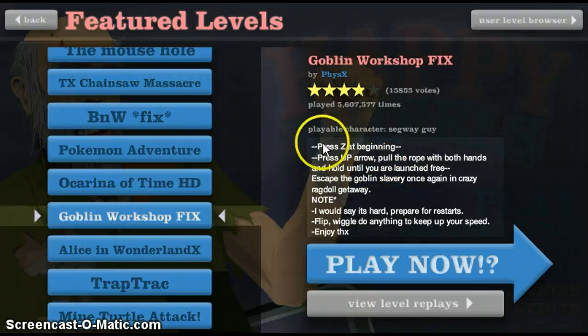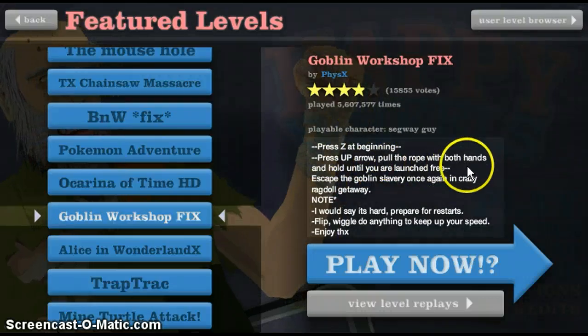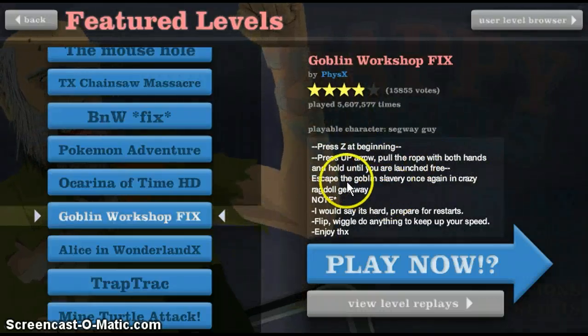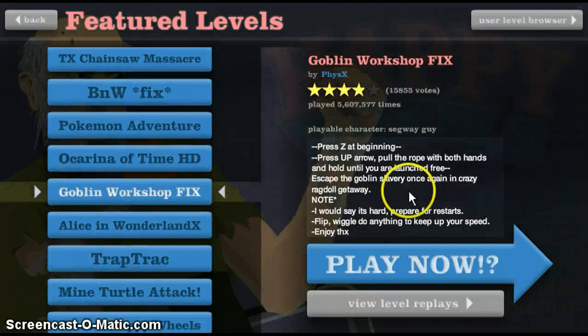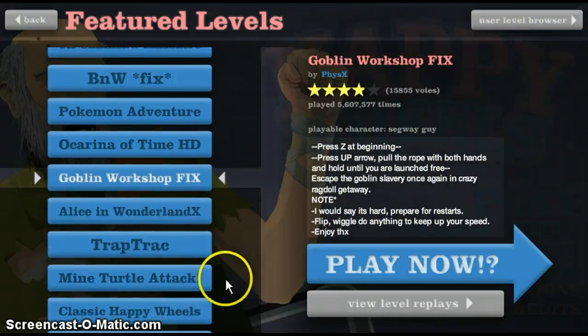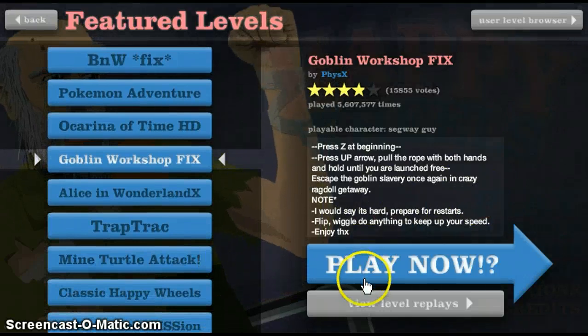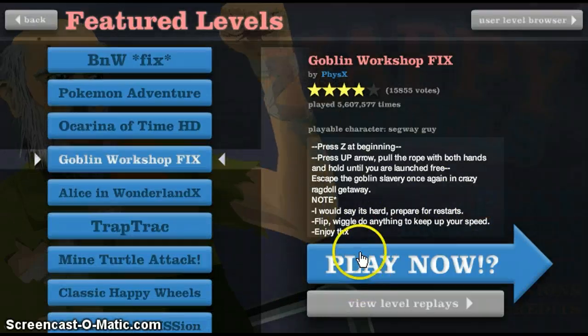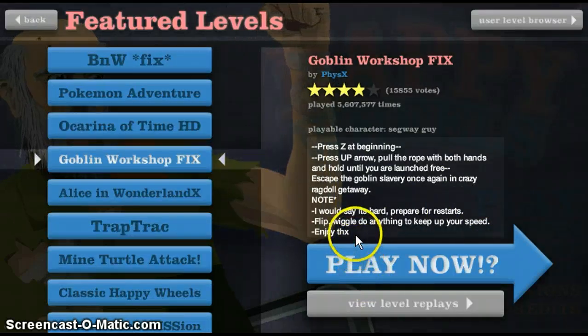Press Z at the beginning, press up arrow, pull the rope with both hands and hold until you are launched. Free, skip the Goblin slavery once again and crazy ragdoll getaway. I would say it's hard, prepare for restarts. Flip, wiggle, do anything to keep your speed.